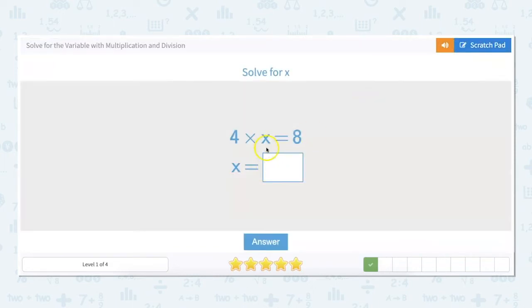Then we could also look at it and say okay does that work? 4 times 2 equals 8. Is that right? Yes it is. So we know that x is correct. x equals 2.